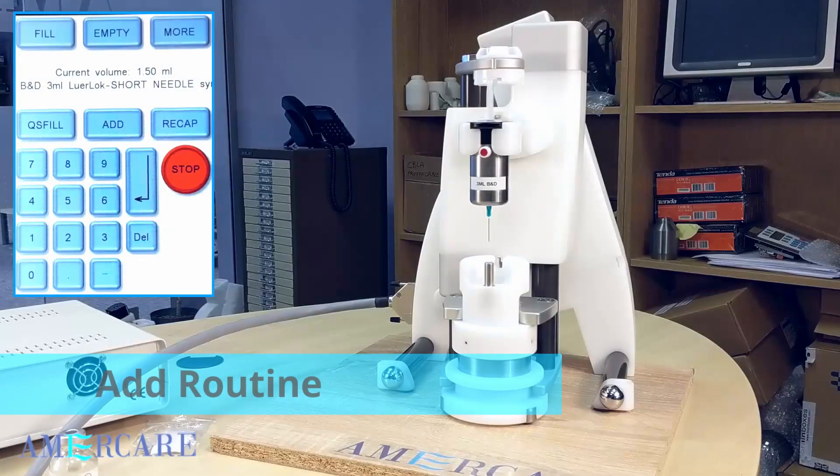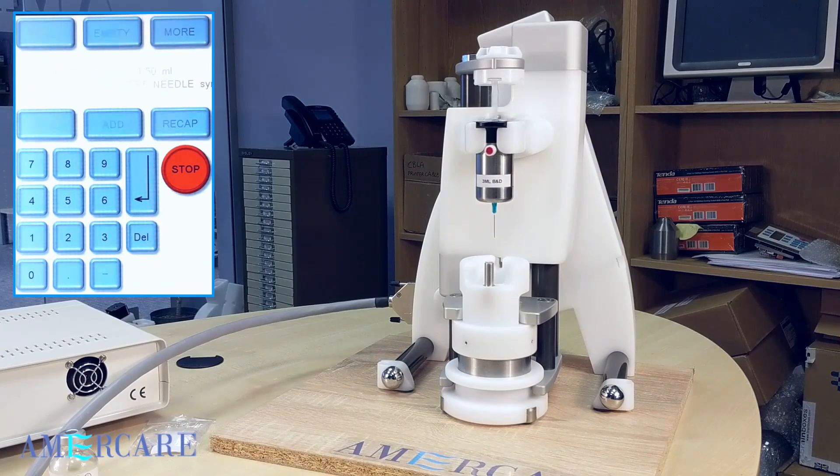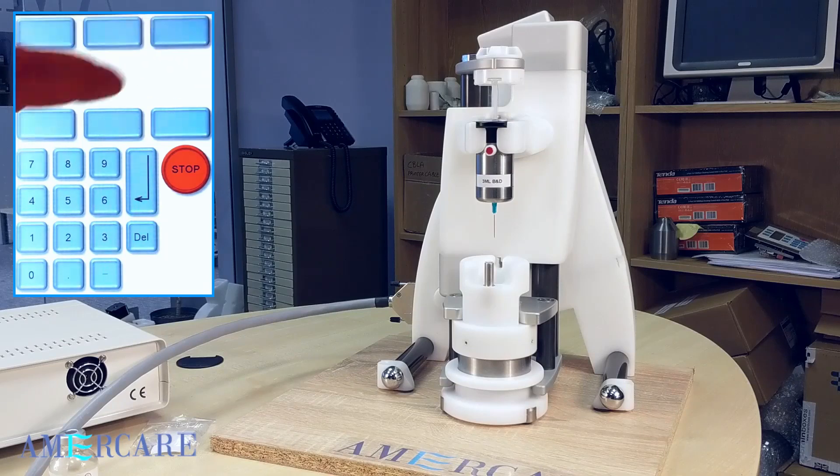The add routine gives you the ability to add product from a previously filled syringe. Press add. The syringe will now move in and the system will ask if the syringe has loaded ok. If it has loaded correctly, then press yes.